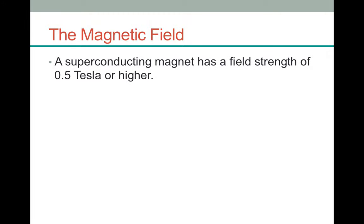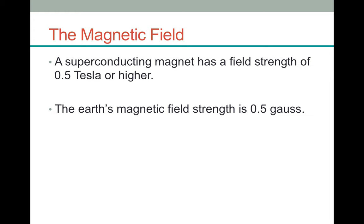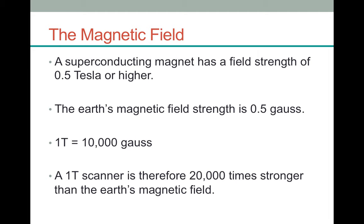A superconducting magnet has a field strength of 0.5 T or higher. At the MRI centre where I work, we have two scanners — one is 1.5 T and the other is 3 T. To put things into perspective, the Earth's magnetic field is 0.5 Gauss, and one Tesla equals 10,000 Gauss. This means a one Tesla scanner is 20,000 times stronger than the Earth's magnetic field. A 3 Tesla scanner is 60,000 times stronger, and in some centres such as Nottingham, where they have a 7 T scanner, that would be 140,000 times stronger than the Earth's magnetic field.